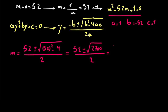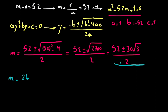Simplifying, the square root of 2700 equals 30 times the square root of 3. So m equals 26 plus or minus 15 times the square root of 3. And we know that m was equal to (2 minus the square root of 3) to the power of x, so (2 minus the square root of 3) to the power of x equals 26 plus or minus 15 times the square root of 3.